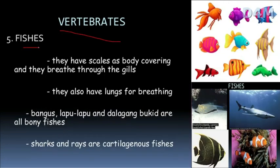The next vertebrate is fish. They have scales covering their body. Fish are divided into two groups: bony fish and cartilaginous fish. An example of cartilaginous fish is the shark.